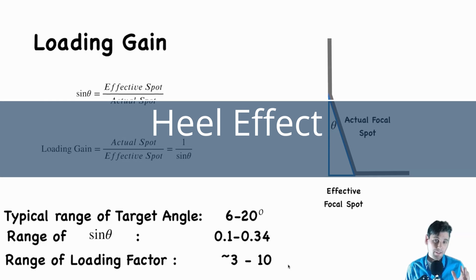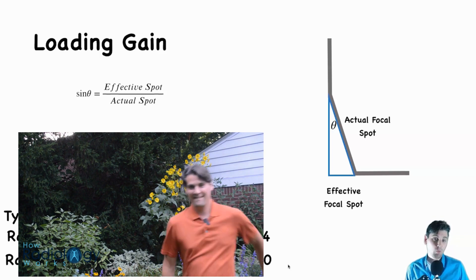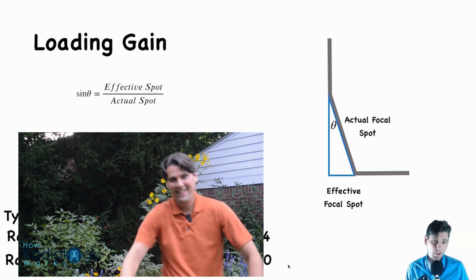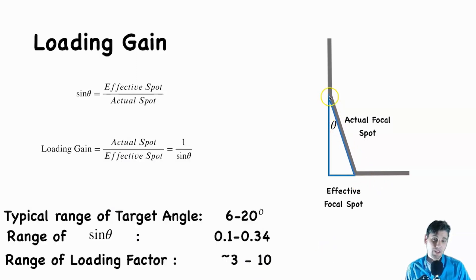One downside of having very shallow angles is something called the heel effect, or the anode heel effect. It gets worse at smaller angles because the x-rays coming out of this region are traveling through more of the material compared to x-rays coming out through the other region. We have a separate video talking about that heel effect.